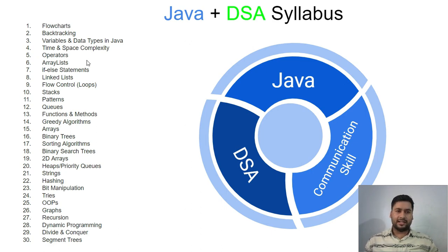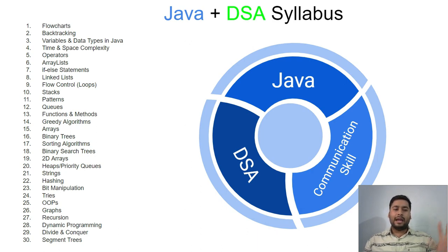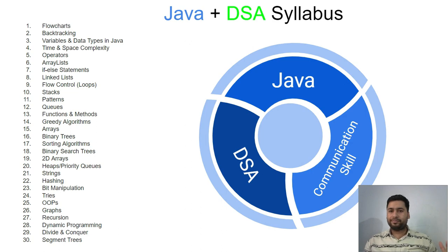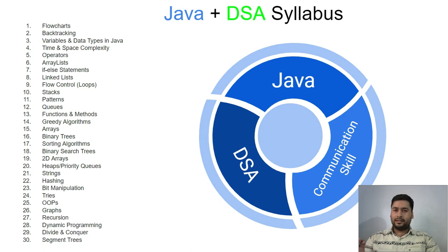For any company, we require three things to get inside a product-based company or whatever company you are targeting. First, people need knowledge of Java. Once you get the knowledge of Java, you have to prepare for communication skills. Along with communication skills, you also have to focus on DSA. Java and DSA are the technical parts, but communication skills you have to manage on your own.